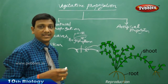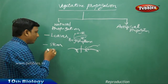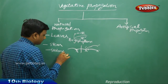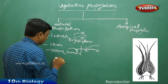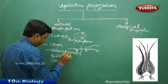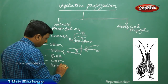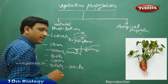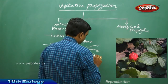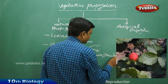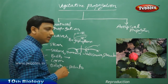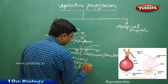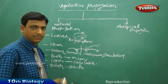This is observed in stolons and runners in plants like Vallisneria and strawberry. We also observe propagation through stem in other cases like bulb, corm, and tuber. For tuber, the example is potato; for stolons and runners, Vallisneria and strawberry; for bulb, the example is onion; and for corm, the example is Colocasia.